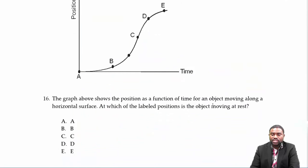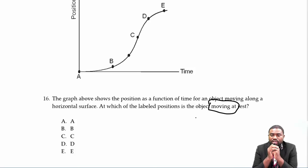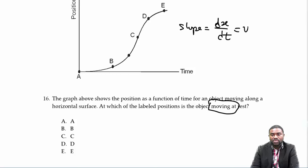The graph above shows position as a function of time for an object moving along a horizontal surface. At which labeled position is the object at rest? Since this is a position-vs-time graph, the instantaneous velocity is the slope dx/dt. The slope at t equals 0 is zero, so the answer is A.